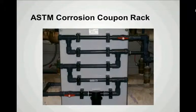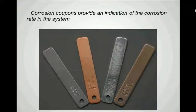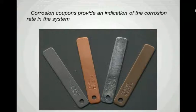Here are examples of the various corrosion coupon specimens: steel, copper, galvanized steel, and brass. These specimens are inserted in the coupon rack, exposed to the flow of water, and then removed for analysis at the end of the 90-day test.